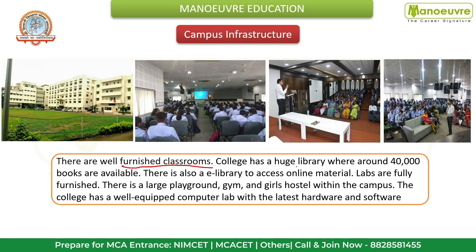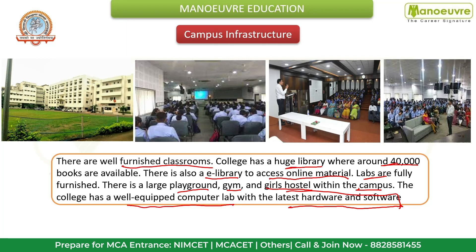The college has well-furnished classrooms and a huge library with around 40,000 books available. There is also an e-library where online material is easy to access. Labs are fully furnished. There is a large playground, gym, and girls' hostel within the campus. The college has a well-equipped computer lab with the latest hardware and software, and the program is taught by experienced faculty members with expertise in various areas of computer science.